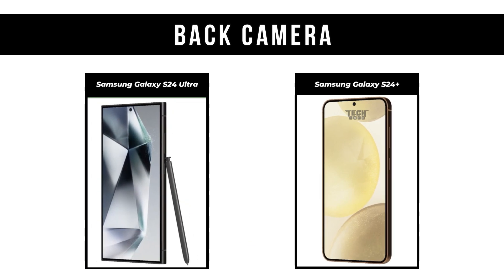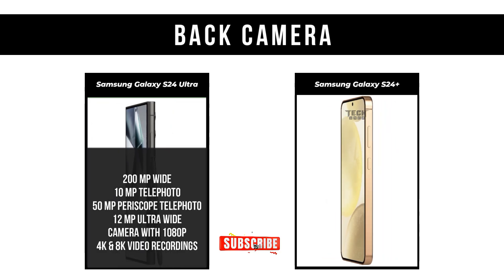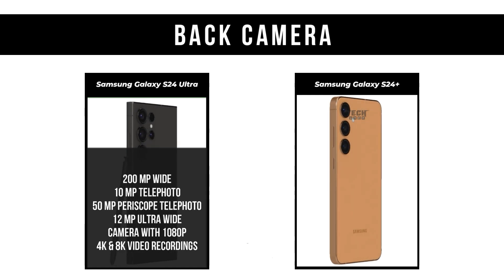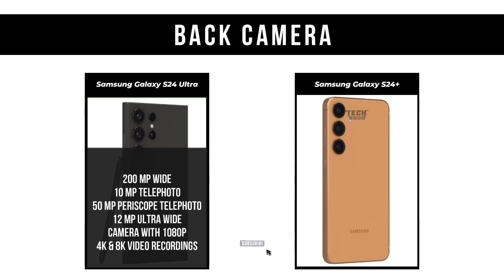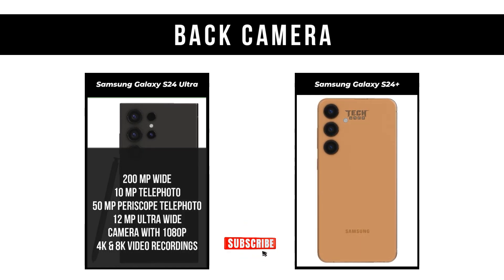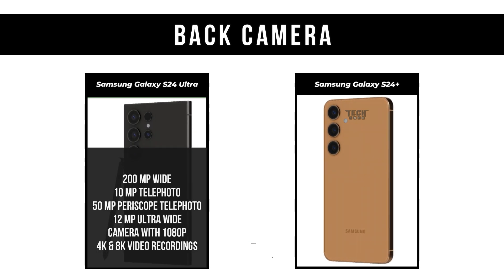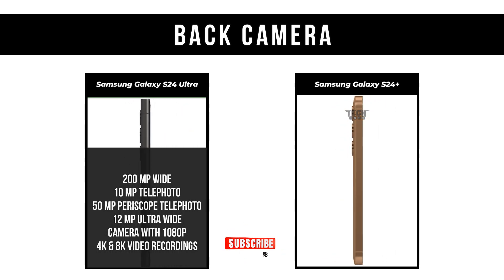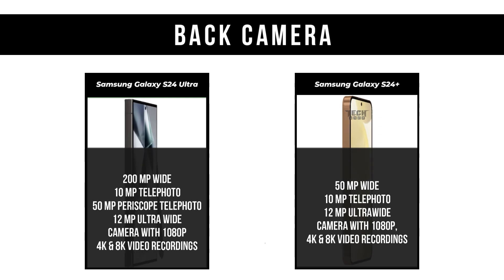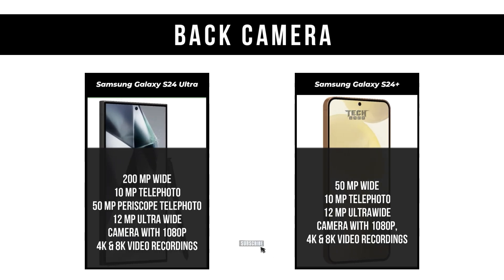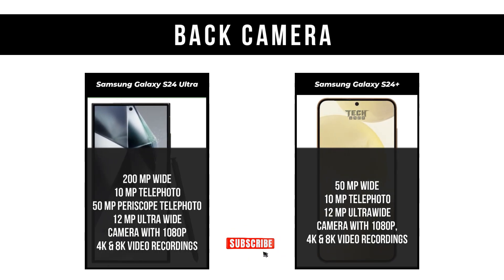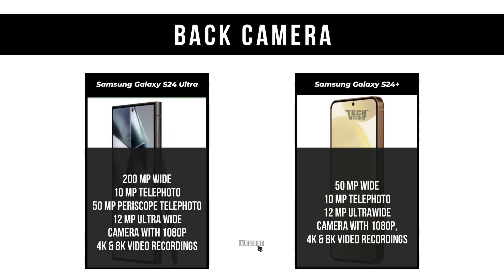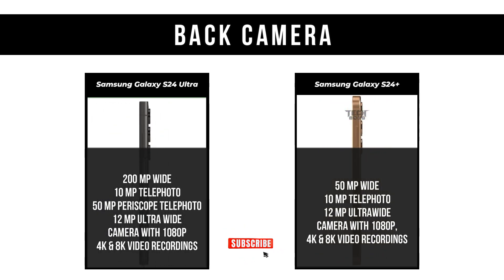Back Camera: Samsung Galaxy S24 Ultra features a 200MP wide, 10MP telephoto, 50MP periscope telephoto, and 12MP ultra-wide camera, with 1080p, 4K, and 8K video recording. Samsung Galaxy S24 Plus features a 50MP wide, 10MP telephoto, and 12MP ultra-wide camera, also with 1080p, 4K, and 8K video recording.